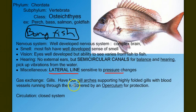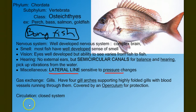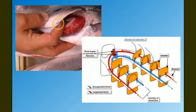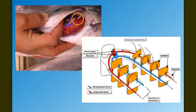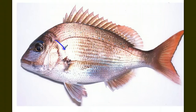Bony fish obviously have gills — four bony gill arches that support highly folded gills with blood vessels running through them. They're covered by an operculum, a flap that covers the gill opening. So we only have one gill slit, one opening, but inside there are multiple bony arches supporting the gills — four gill arches. This single gill opening is a change from the multiple gill slits seen in more primitive fish.